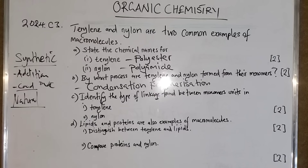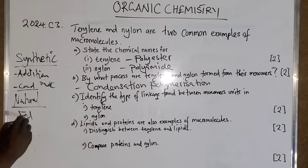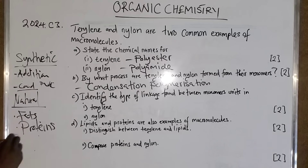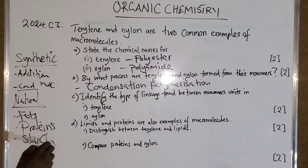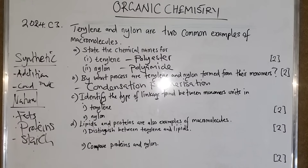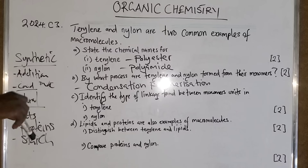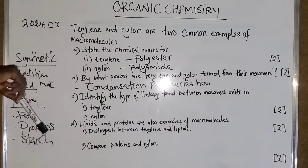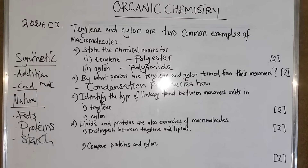Natural polymerization refers to macromolecules found naturally in nature. Natural examples include fats, proteins, and starch or carbohydrates. Notice that by the end of this, several questions have already been answered. Natural polymerization includes fats, proteins, and starch.